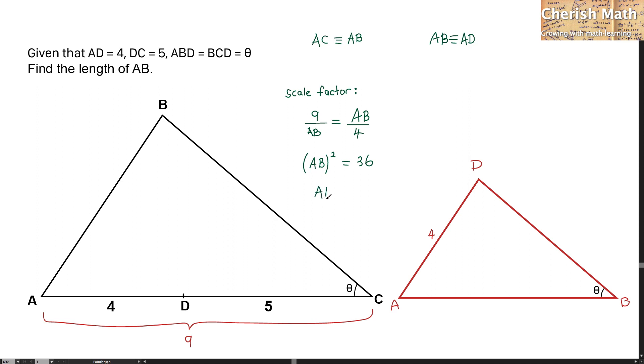And now, the answer is, for AB, I have to take the square root of the 36, which is 6 units. And the puzzle is solved. Thanks for watching, and please subscribe.